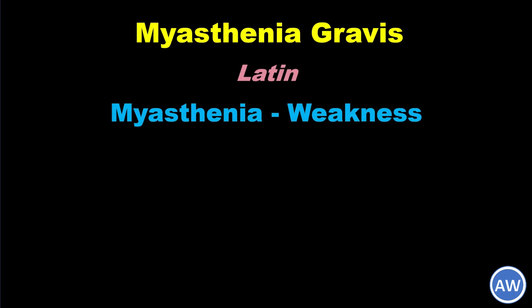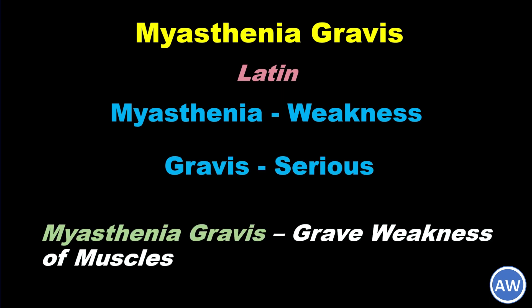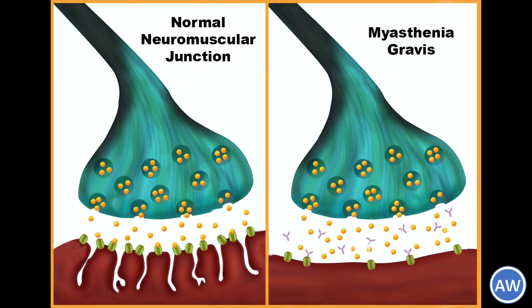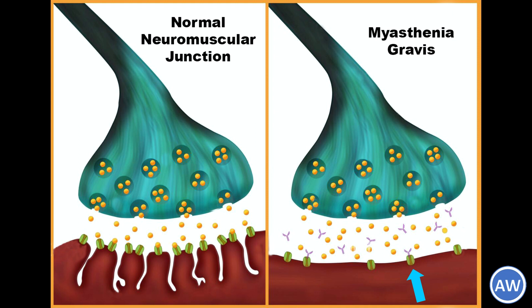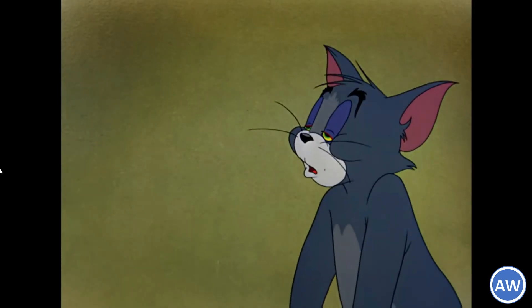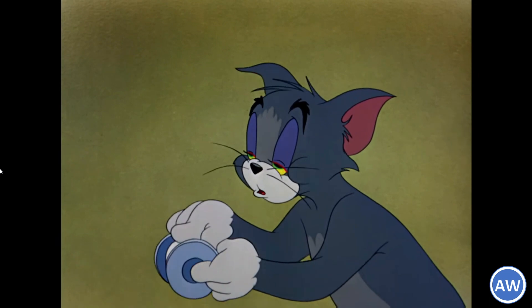The word myasthenia gravis is derived from ancient Latin. Myasthenia means weakness and gravis means serious. Thus myasthenia gravis literally means grave weakness of muscles. It is an autoimmune disorder where there is formation of antibodies against acetylcholine receptors at the post-synaptic membranes of the neuromuscular junctions. These antibodies attack and destroy acetylcholine receptors, which leads to impaired signal transduction, resulting in generalized muscle weakness and fatigability.